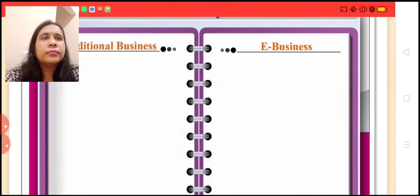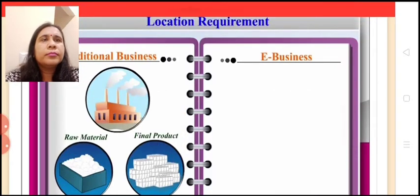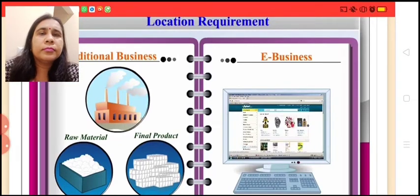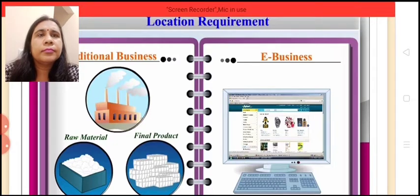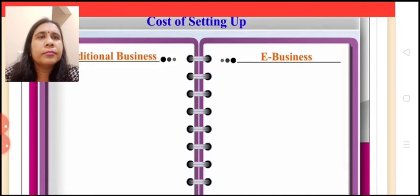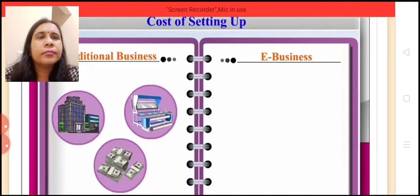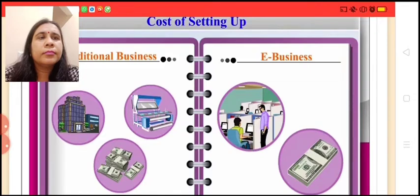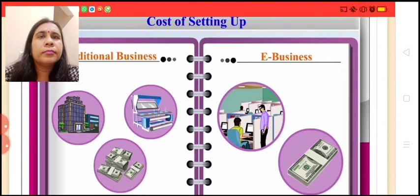Location requirement: Traditional business should be close to the source of raw materials or final product whereas e-business does not require location for its operation. Cost of setting up: Traditional business requires high cost of setup whereas e-business requires low cost as no physical facilities are required in e-business.